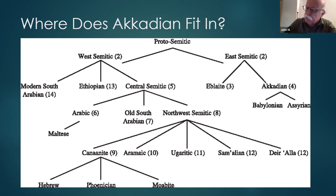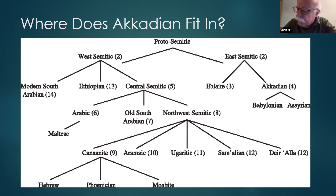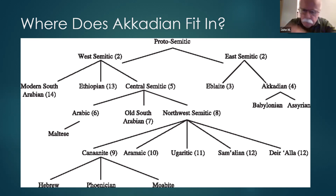Semitic languages and other language families offer a challenge to this model of language change, as the Semitic peoples occupied a relatively small area with not many insuperable natural barriers. They had rivers, not too many mountains in the Near East, except in Syria and places like that. So there was always a lot of contact between the different languages.